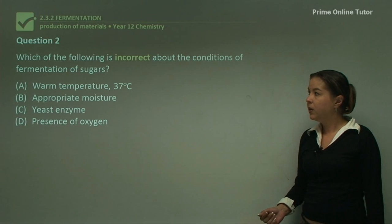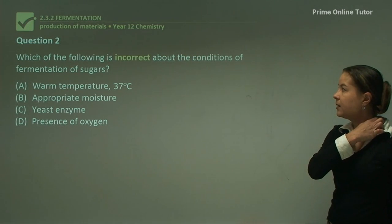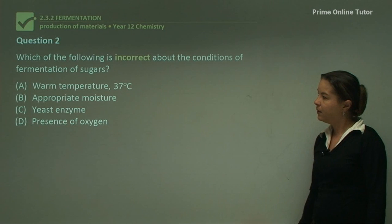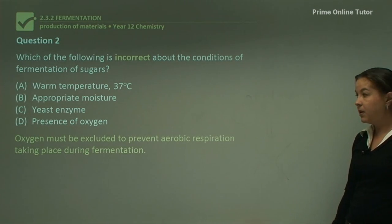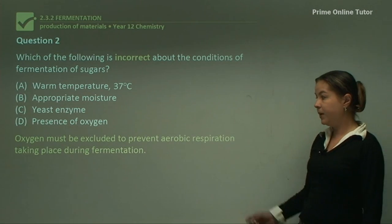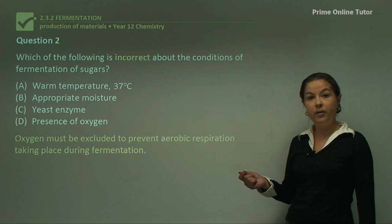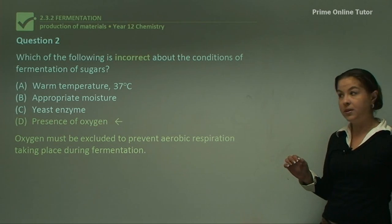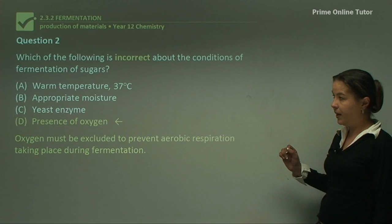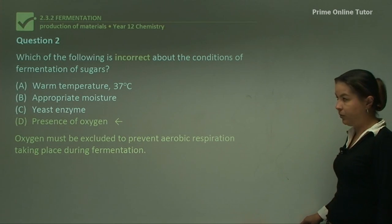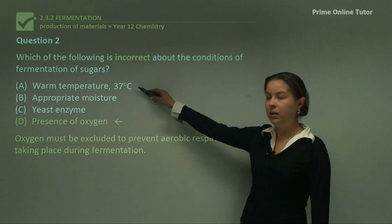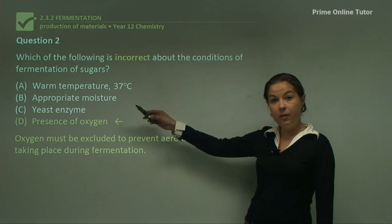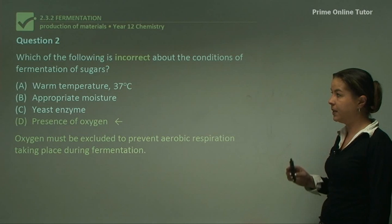Question two: which of the following is incorrect about the conditions of fermentation of sugars? Oxygen must be excluded to prevent aerobic respiration taking place during fermentation. So the answer is that the presence of oxygen is incorrect. To recap, the correct conditions are: a warm temperature of 37 degrees, appropriate moisture, and a yeast enzyme for fermentation.